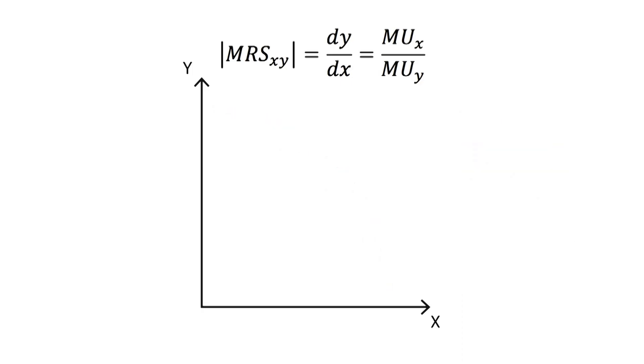We will now calculate the marginal rate of substitution for a different utility function. This time, the utility function will be equal to x multiplied by y. Following the same steps as before, we will first calculate the derivatives for x and y. The derivative for x is equal to y, and the derivative for y is equal to x. Once again, the axiom is met, proving that the indifference curve will be decreasing.